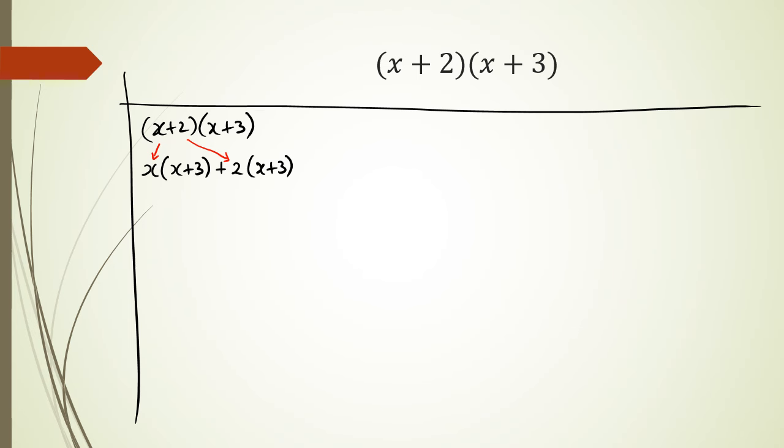I could actually start expanding this. So I've got x times x which is x squared, and then I've got x times 3 which is plus 3x. Then I have 2 times x which is plus 2x, and of course I also have 2 times 3 which is plus 6. So combining this together, my like terms, I only have two like terms here. Putting this together I'm going to get x squared plus 5x plus 6.